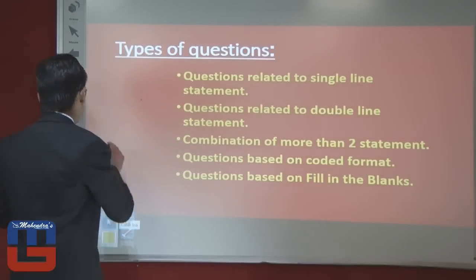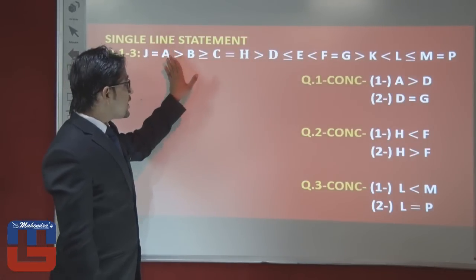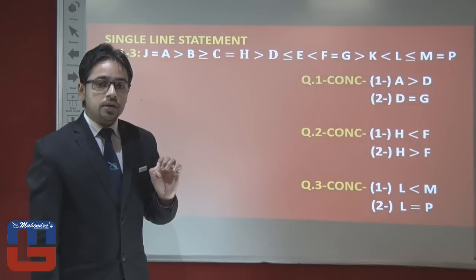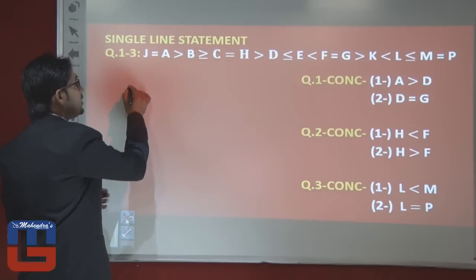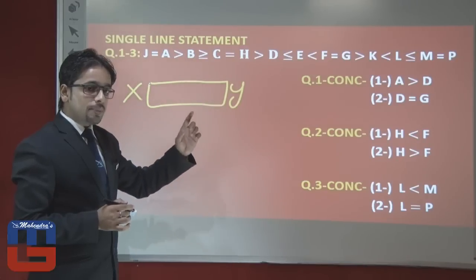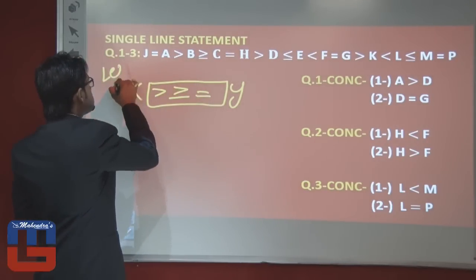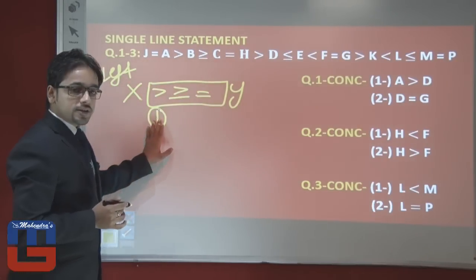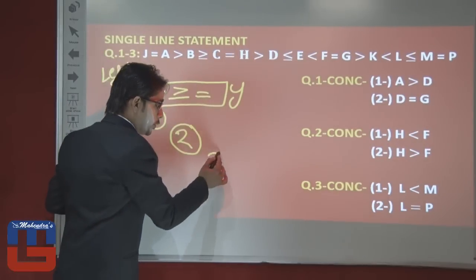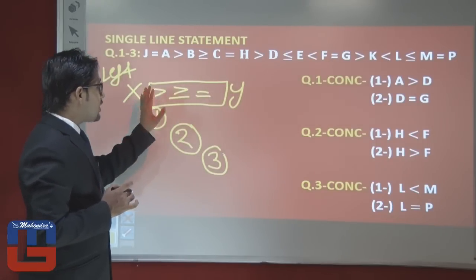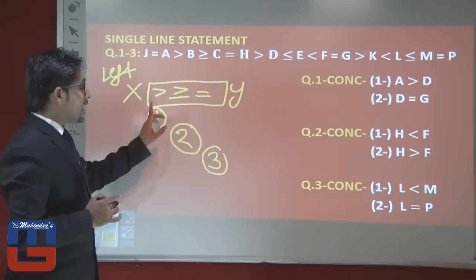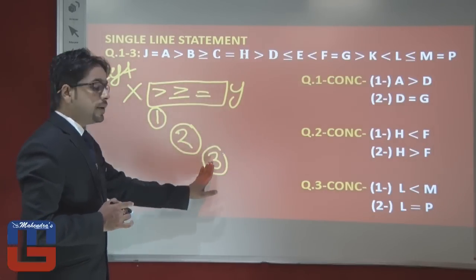For single line statement questions, here is the short trick. If all the symbols between two elements like X and Y are moving towards the left, then the first priority should be greater than (>). If greater is not present, the second priority should be greater than or equal (≥). If both are absent, the third priority should be equal (=). It doesn't matter how many times a symbol repeats.